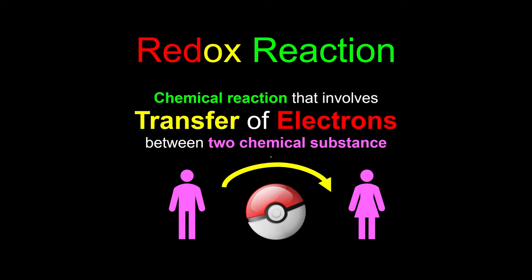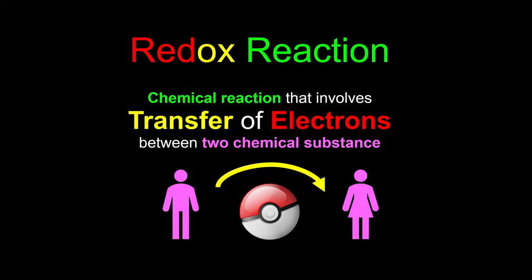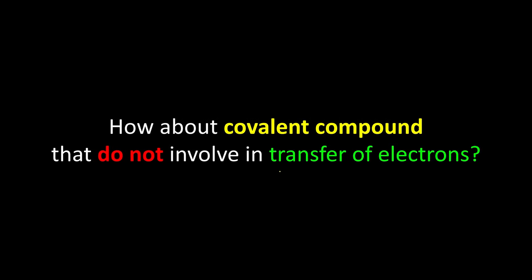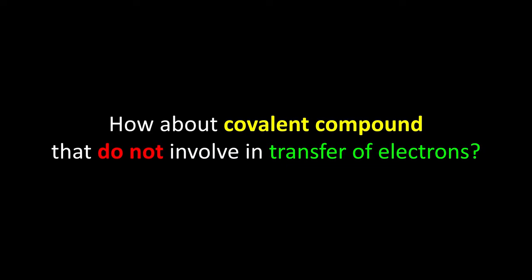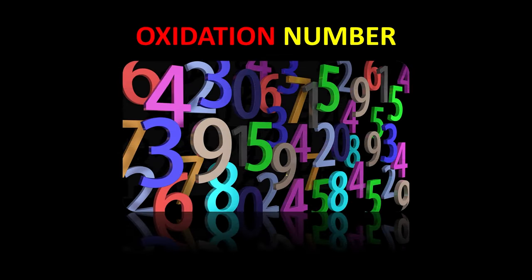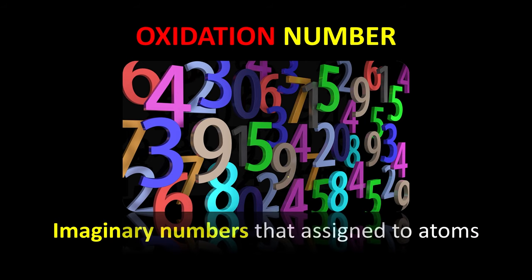In the previous video, we learned redox reaction is all about the transfer of electrons between two chemical substances. How about those covalent compounds that do not involve the transfer of electrons? Introducing oxidation numbers. These numbers are just imaginary numbers assigned to atoms so we know whether a substance undergoes oxidation or reduction.